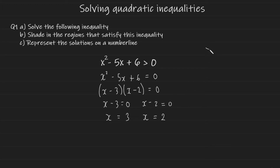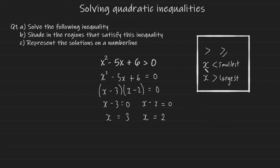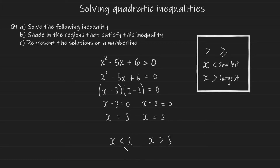Having a greater than, or a greater than or equals to symbol in your inequality means your solutions are on the outside. Your solutions are going to look like this: x is going to be less than your smallest root — in this case two is the smallest — and x is going to be greater than your largest root, which is three. So the solutions are x is less than two and x is greater than three. If it was a greater than or equals to symbol, the solutions would have equals to components.